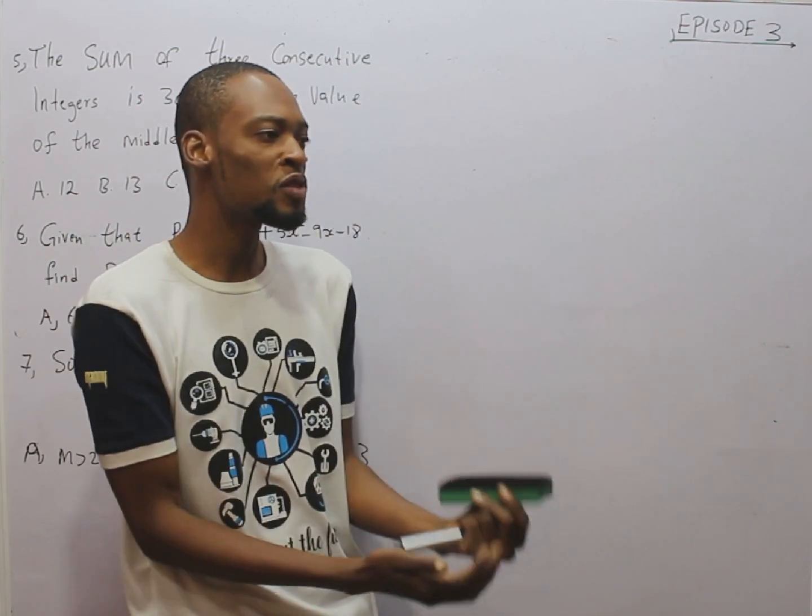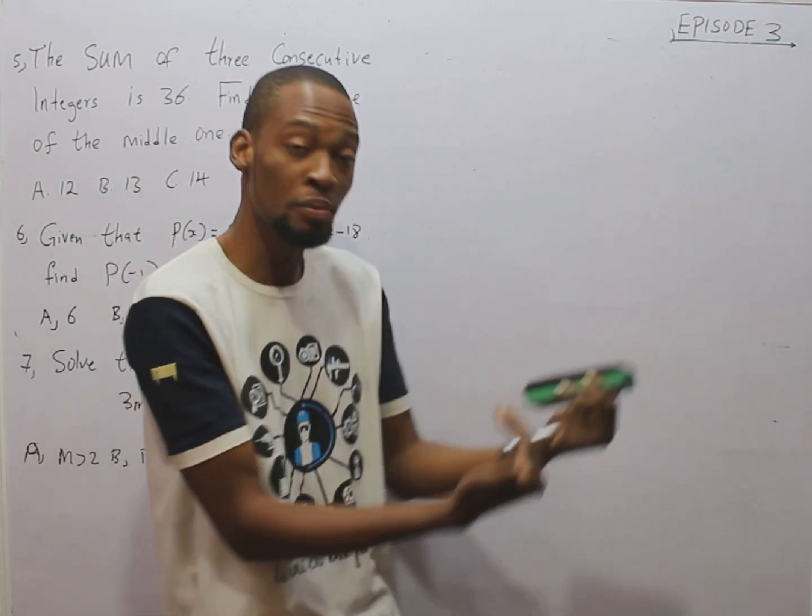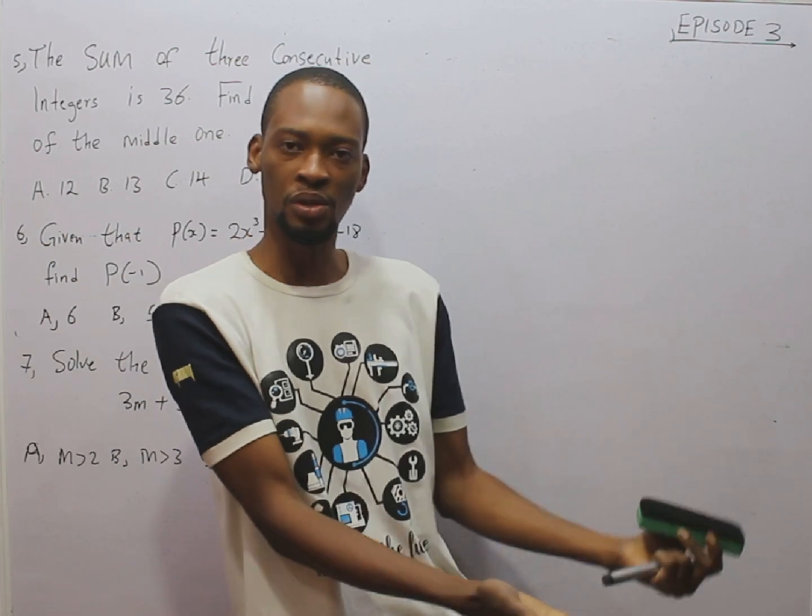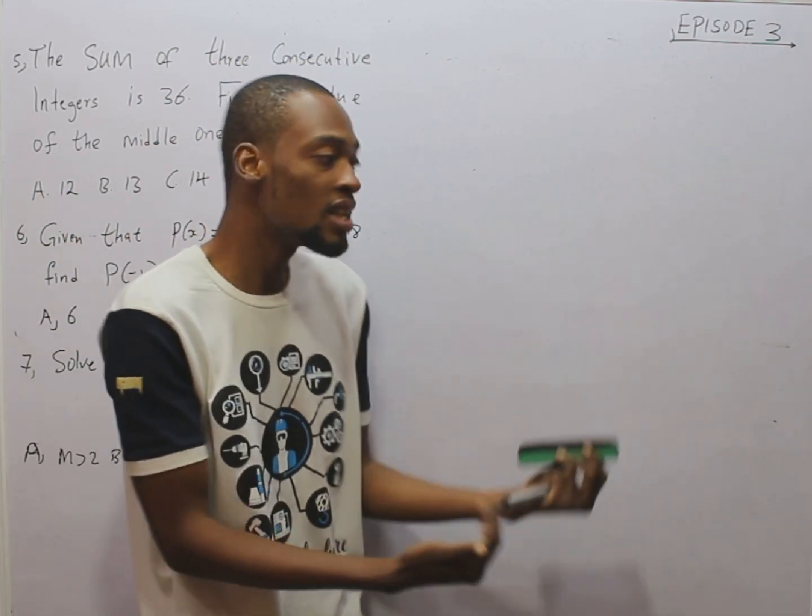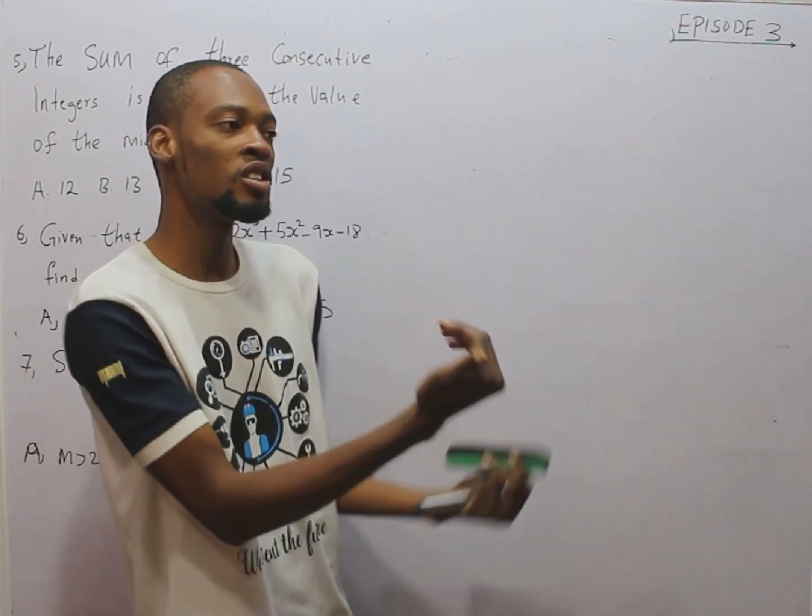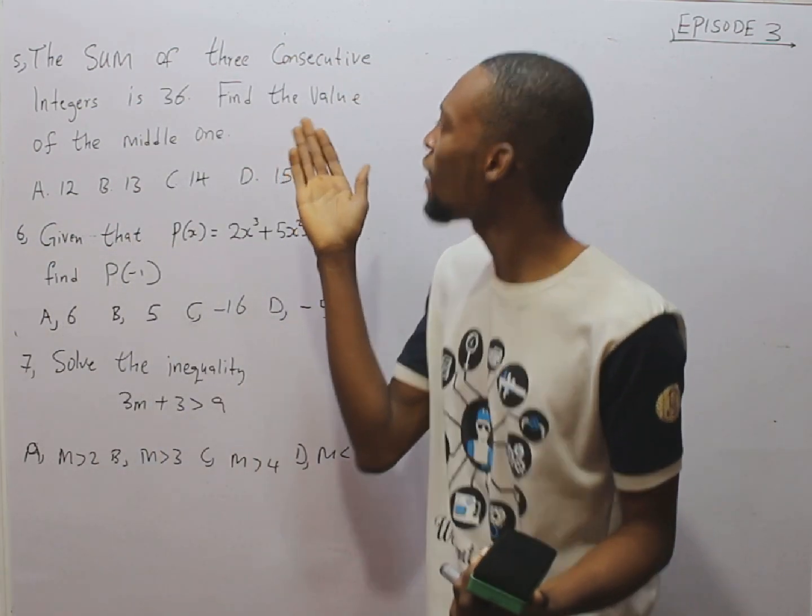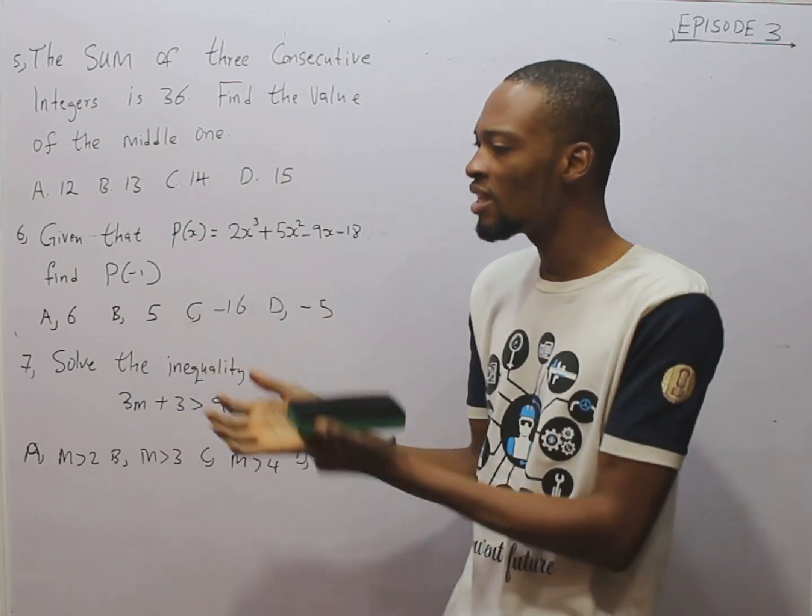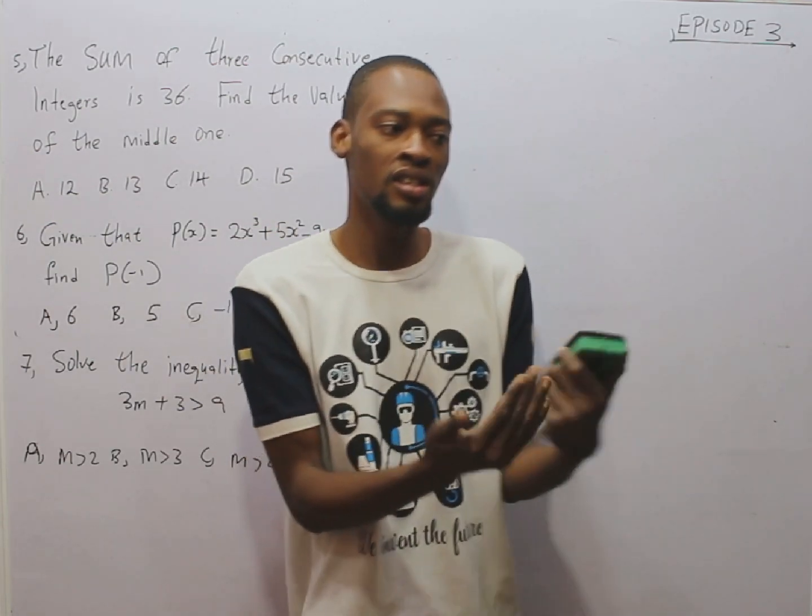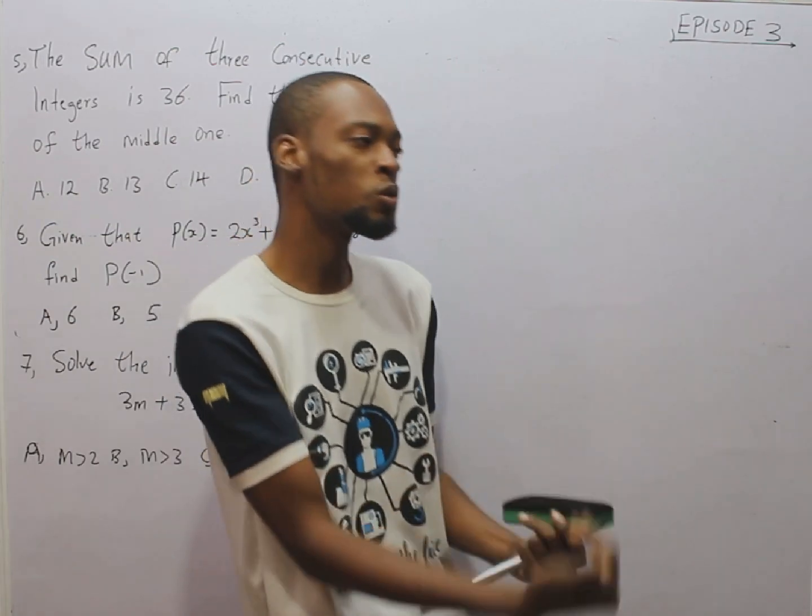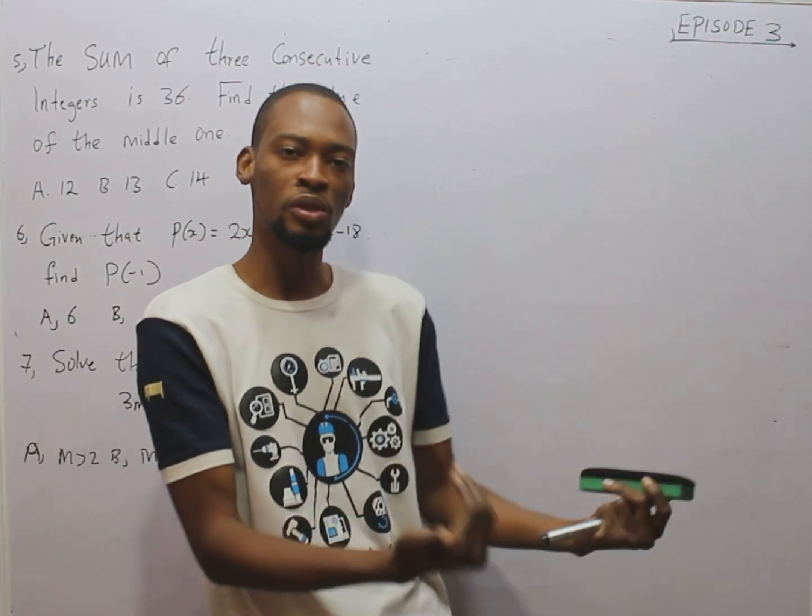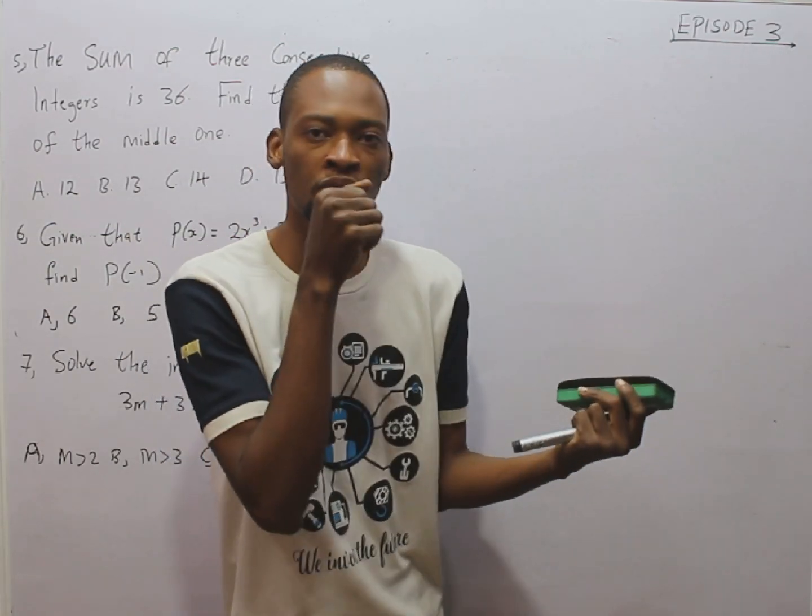Which means, if the first one is 40, the second one has to be 41, the third one is 42. If the first one is 100, the second one will be 101, the third one will be 102. So, if they have said 5 consecutive integers, if the first one is 1, the second one will have to be 2, the third one will have to be 3, the fourth one will be 4, the fifth one will be 5.